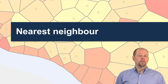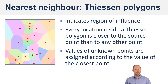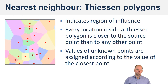A simple yet useful and effective method of creating a statistical surface is known as nearest neighbor, which uses Thiessen polygons — also sometimes referred to as Voronoi diagrams. They indicate regions of influence on the assumption that every location inside one of these Thiessen polygons is closer to the source point than to any other point. The values of unknown points are assigned according to the value of the closest point. This is a really simple, elegant application of Tobler's Law.